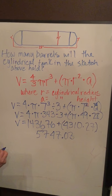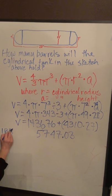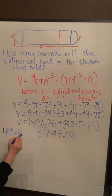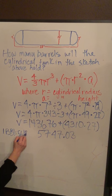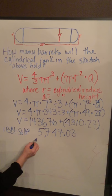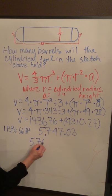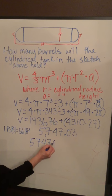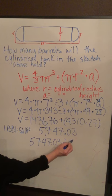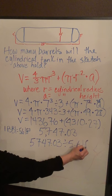One barrel equals 5.61 cubic feet, so you're going to take 5747.03 and divide that by 5.61 cubic feet.